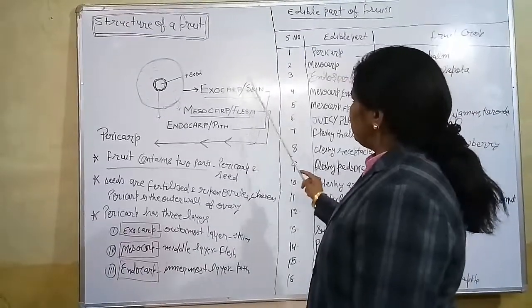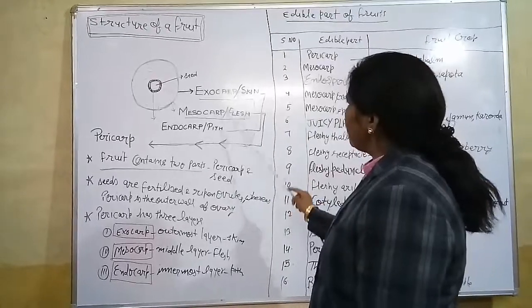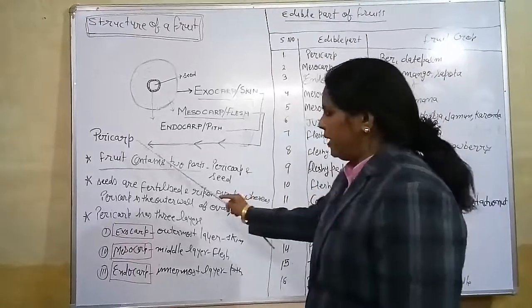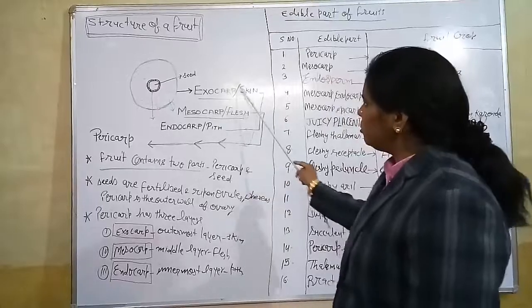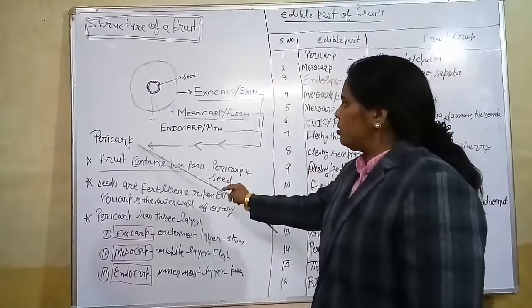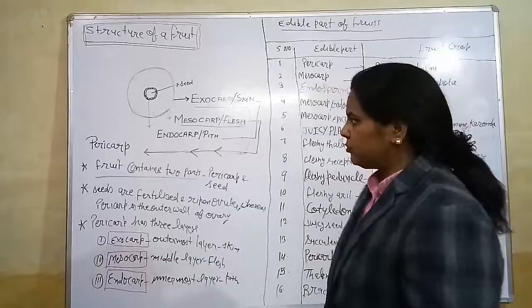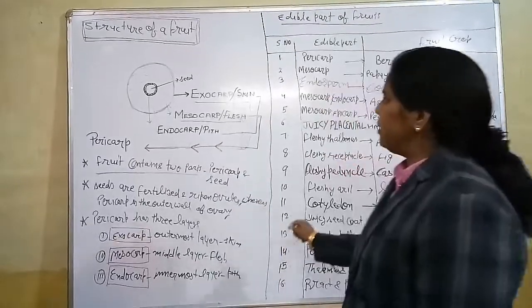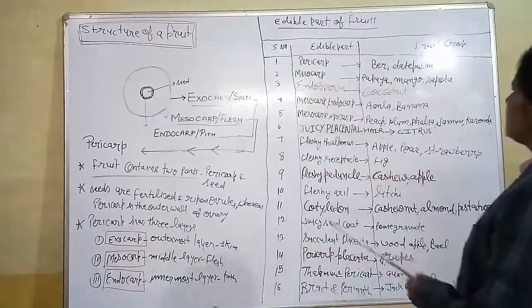In this structure we have seen the different parts of a fruit. As I told you, these different layers are parts of the pericarp. According to these parts, fruits have different edible portions. Let's see the edible parts in this slide.